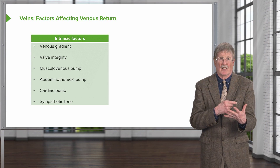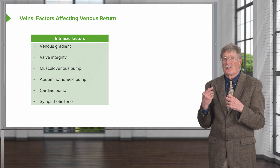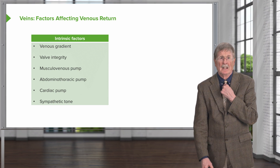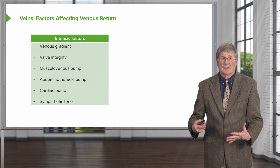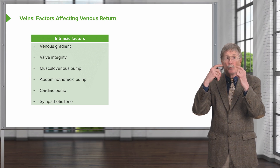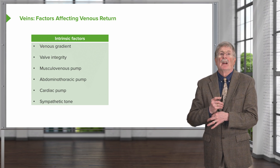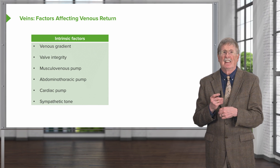Intrinsic factors in terms of venous return to the heart, particularly when you're standing upright, include the venous gradient — the pressure differential between the heart and the structure below — and valve integrity. In our extremities we have valves that allow unidirectional flow most of the time and prevent regurgitant flow, especially when we're standing against gravity. There's also a muscular venous pump.